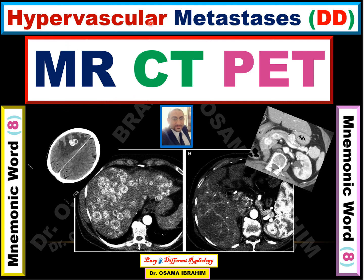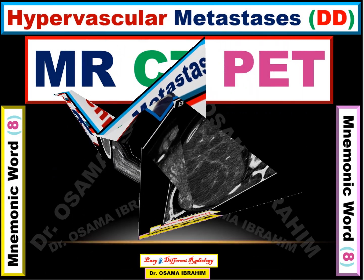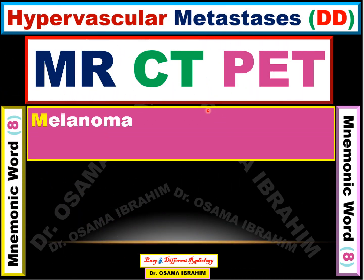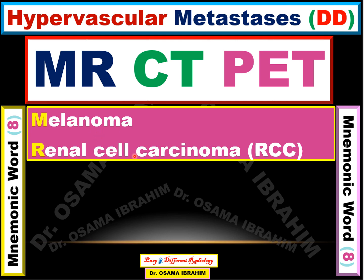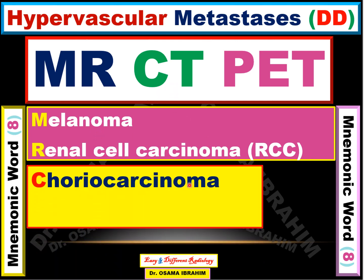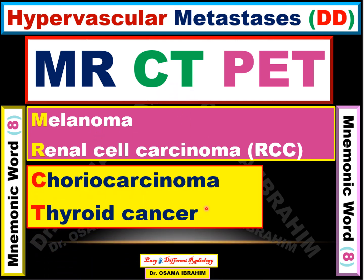Today I talk about hypervascular metastasis differential diagnosis and the mnemonic word for remembering disease differential diagnosis: MRCT BET. M is from melanoma, R from renal cell carcinoma, C from choriocarcinoma, T from thyroid cancer.